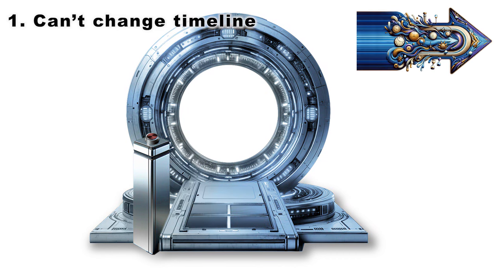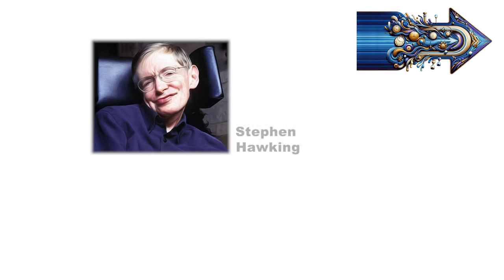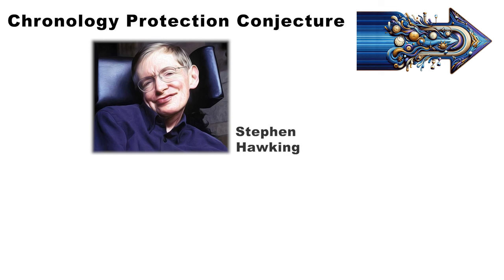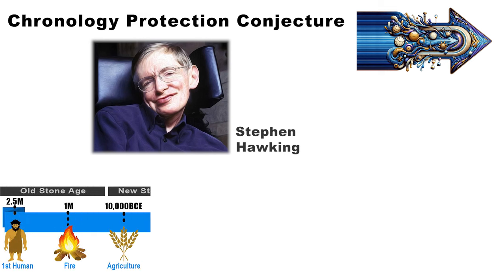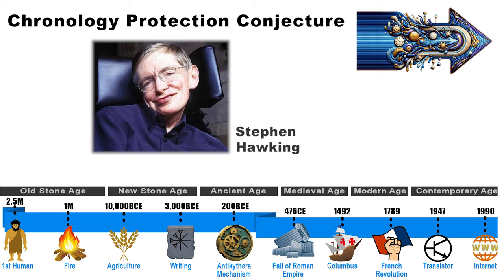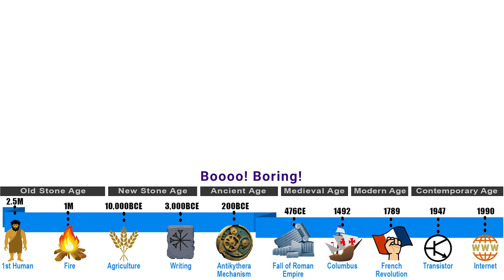The universe may just forbid time machines. Stephen Hawking proposed the chronology protection conjecture, suggesting that the fundamental laws of the universe do not allow changes in the timeline. That's the history of all time. Ooh, boring.